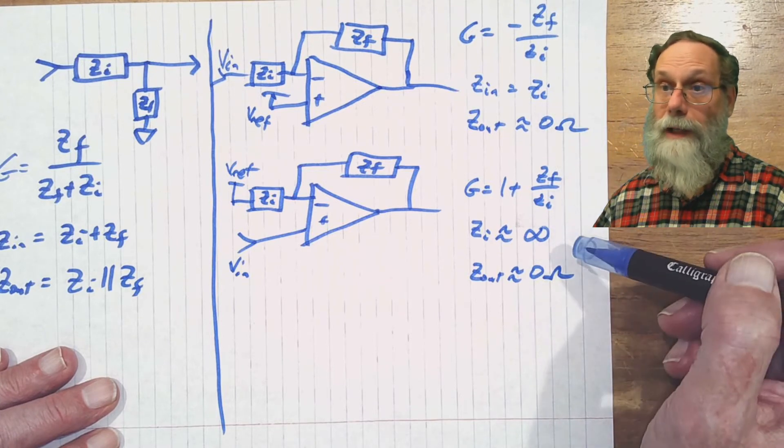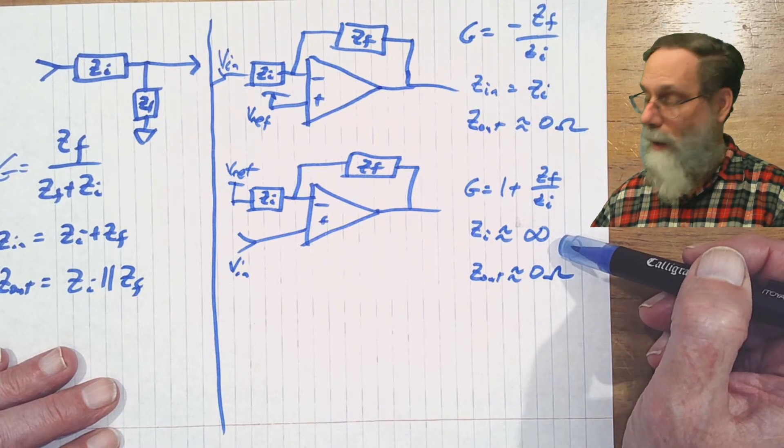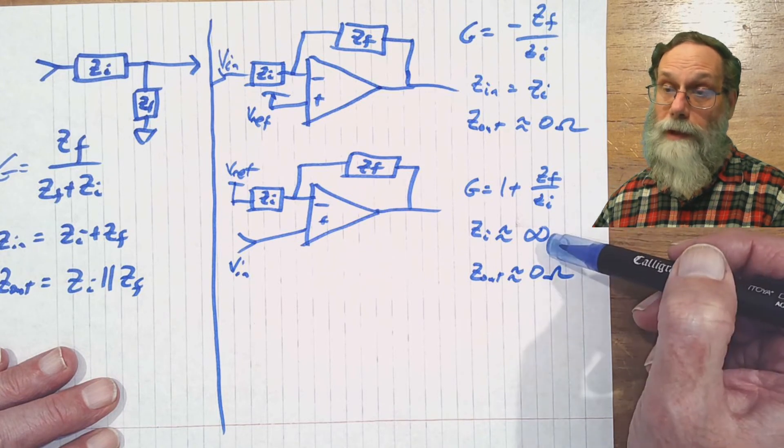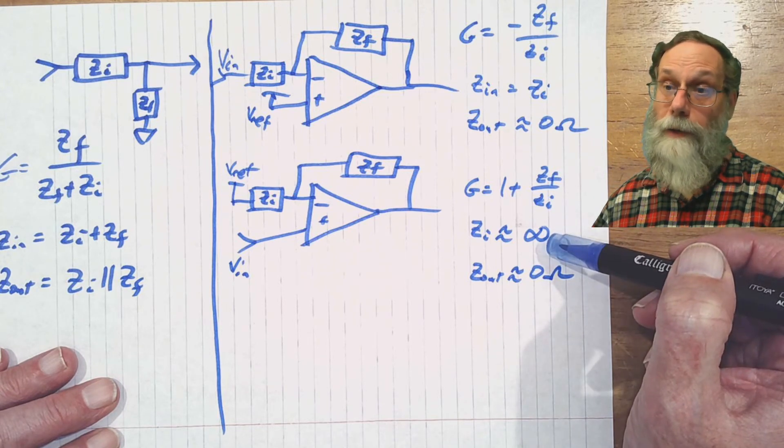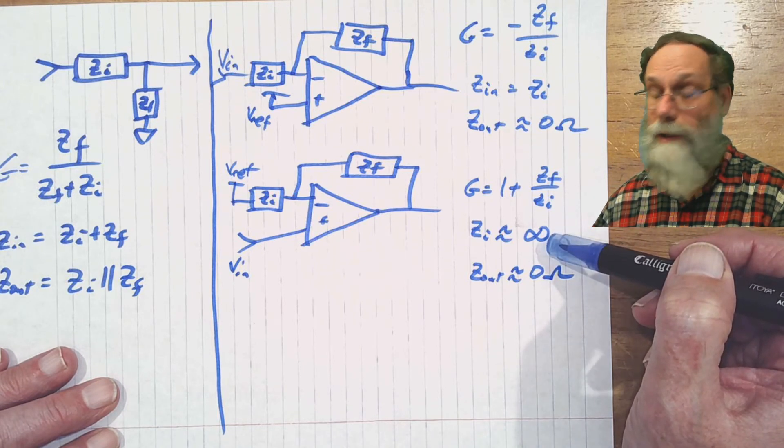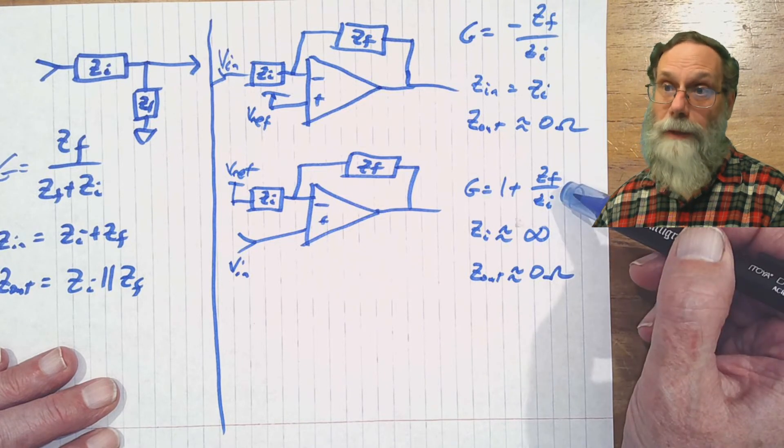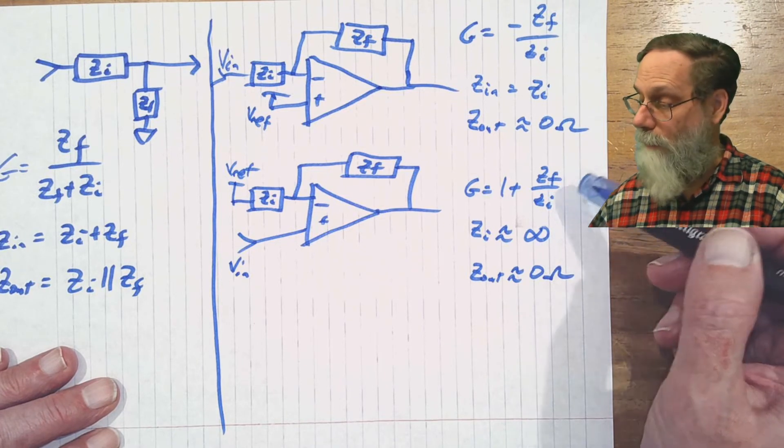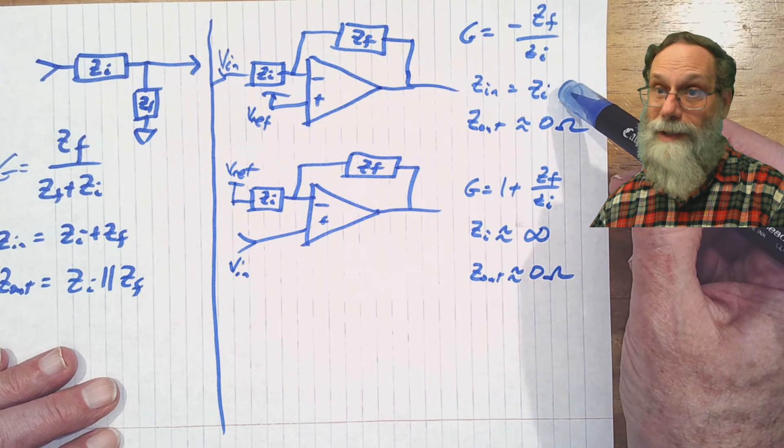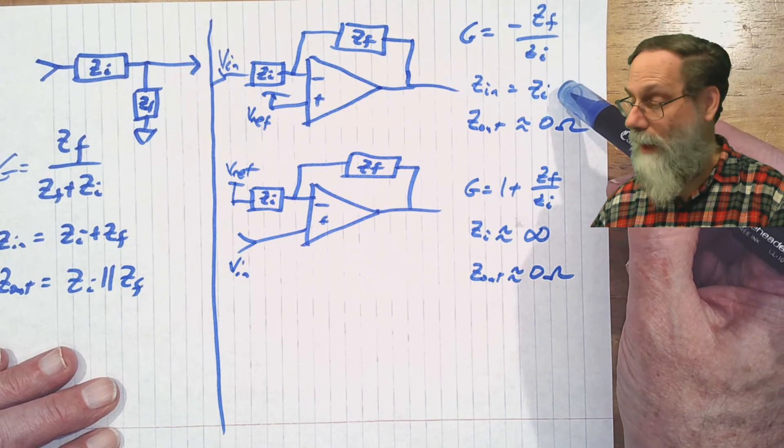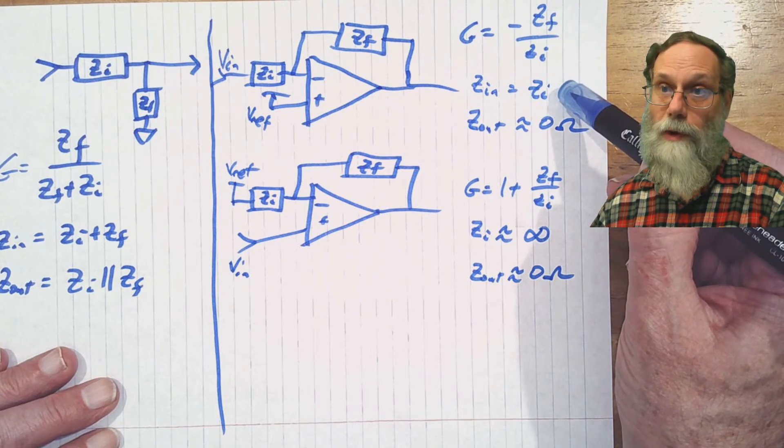Fairly easily defined input impedances. The infinite input impedance of the non-inverting filter is particularly nice, but at the cost of not being able to get zero on the gain. Here the input impedance is just what you put on ZI, so that's fairly easy to control also.